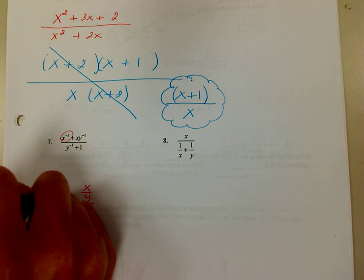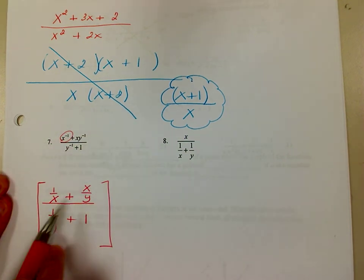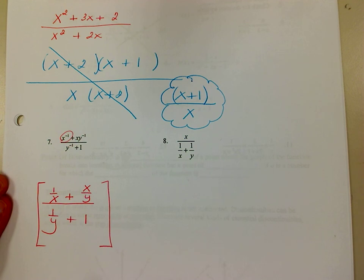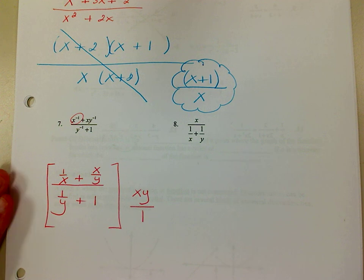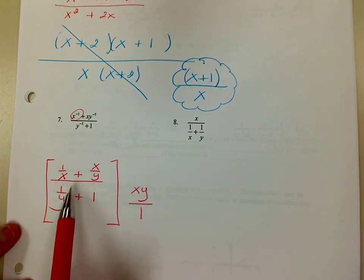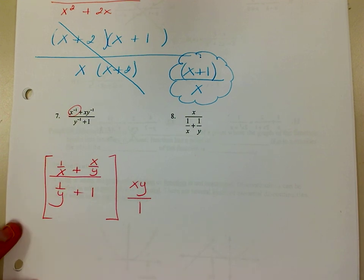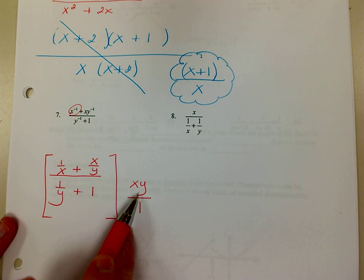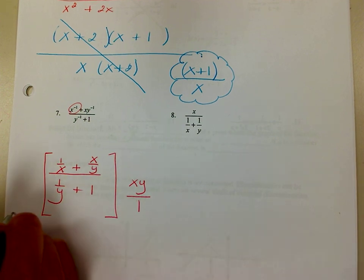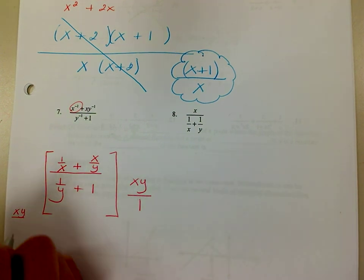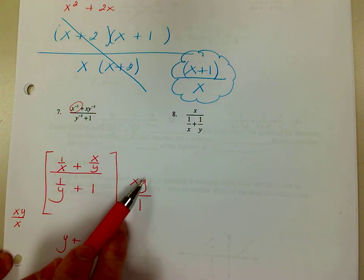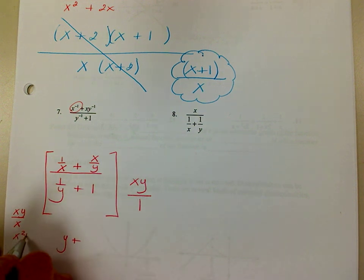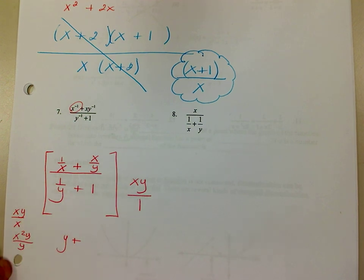So what I'm going to do next is find the common denominator. I have an x, a y, and a y, so the common denominator is going to be xy. I'm going to multiply each of these four terms by xy. So 1 over x times xy: the x's cancel and I'm left with just y. Then multiplying x over y by xy gives x squared y over y, and the y's cancel so I get x squared.